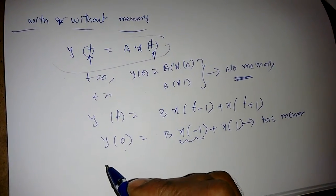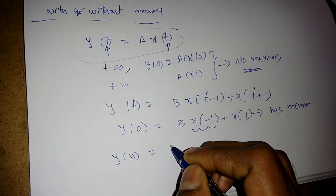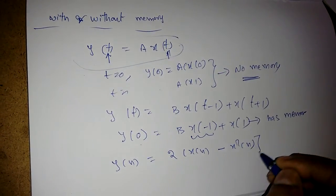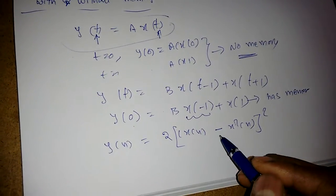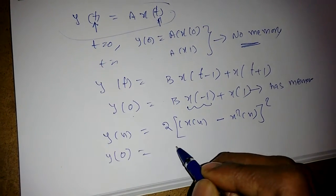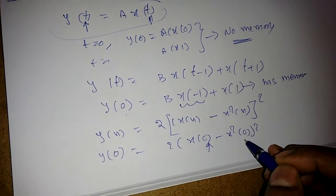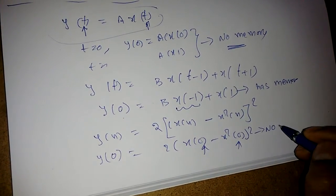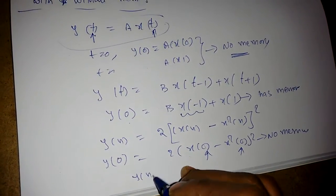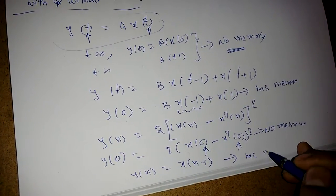The same applies for discrete time. For example, y[n] = 2·x[n] - x²[n]: substituting n=0 gives y[0] = 2·x[0] - x²[0], which depends only on the current index, so it has no memory. But y[n] = x[n-1] depends on a past input, so that system has memory.